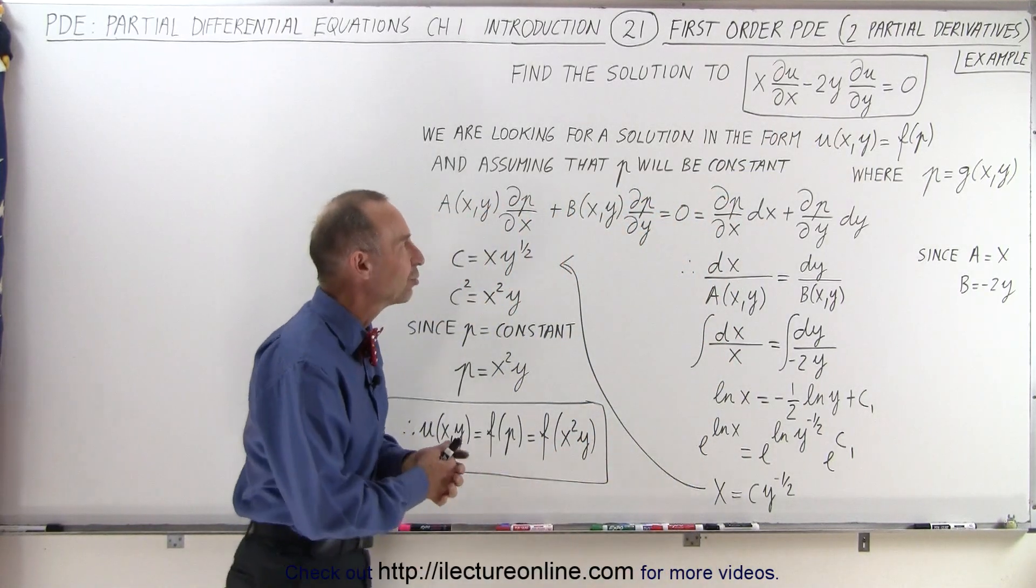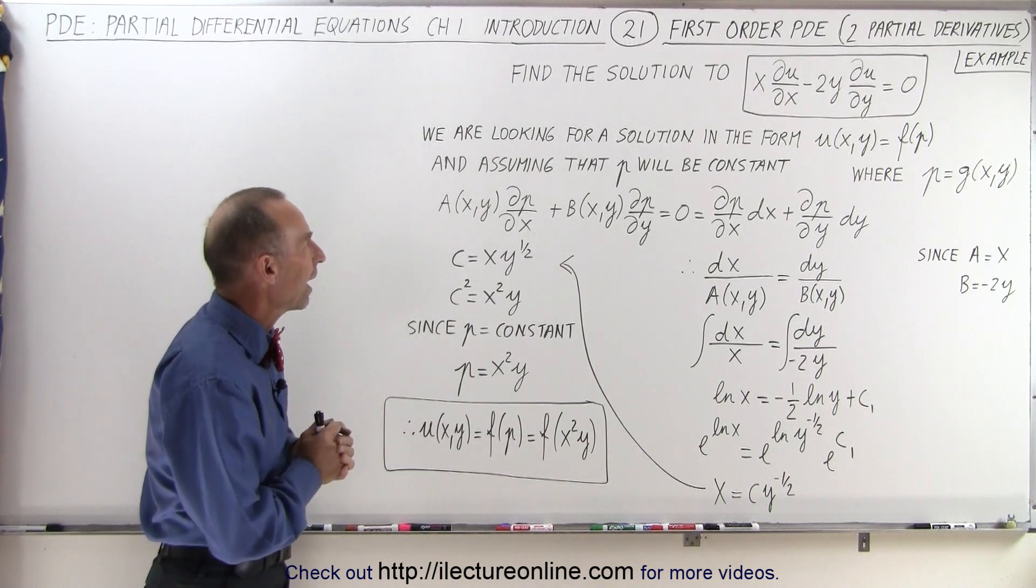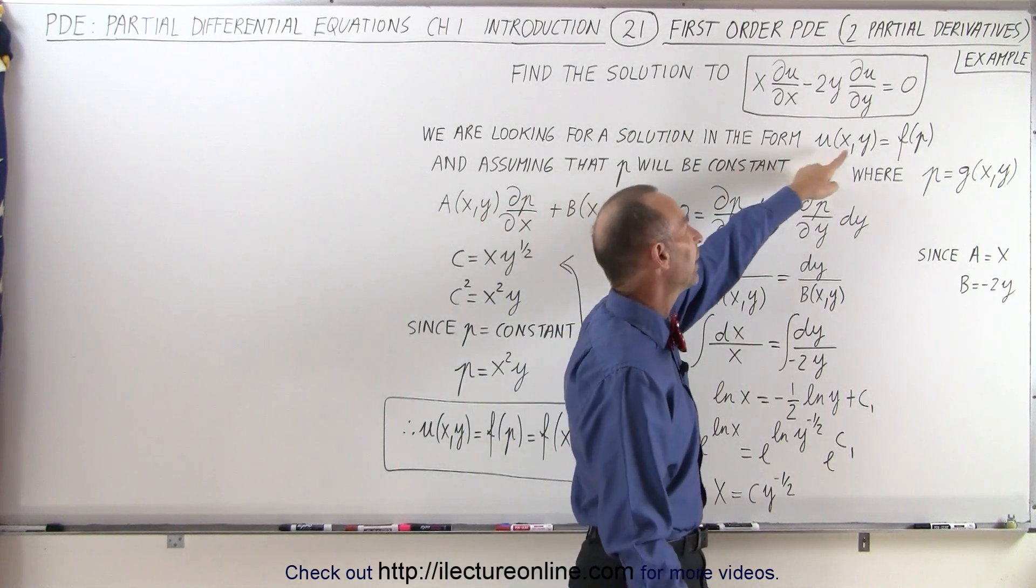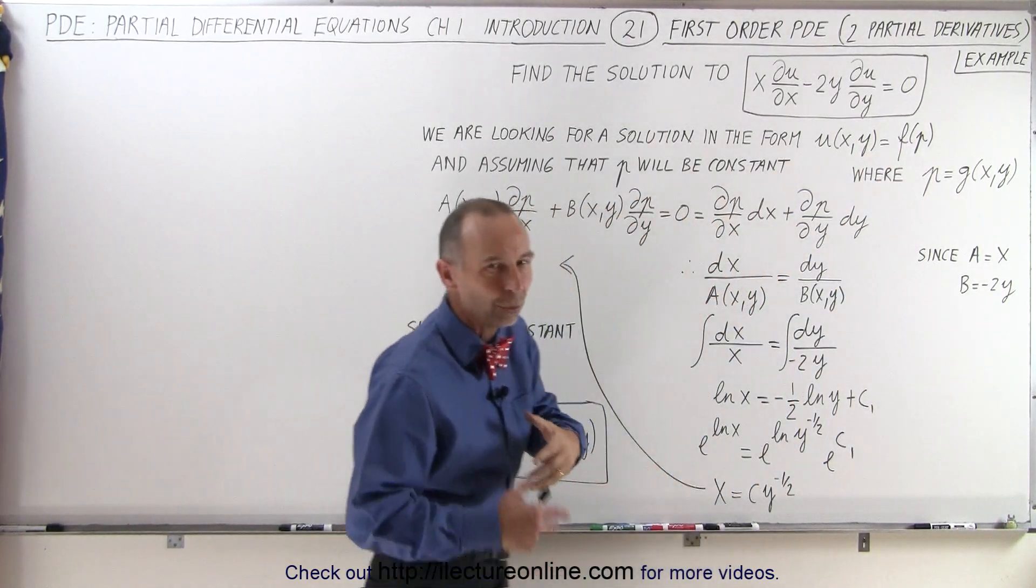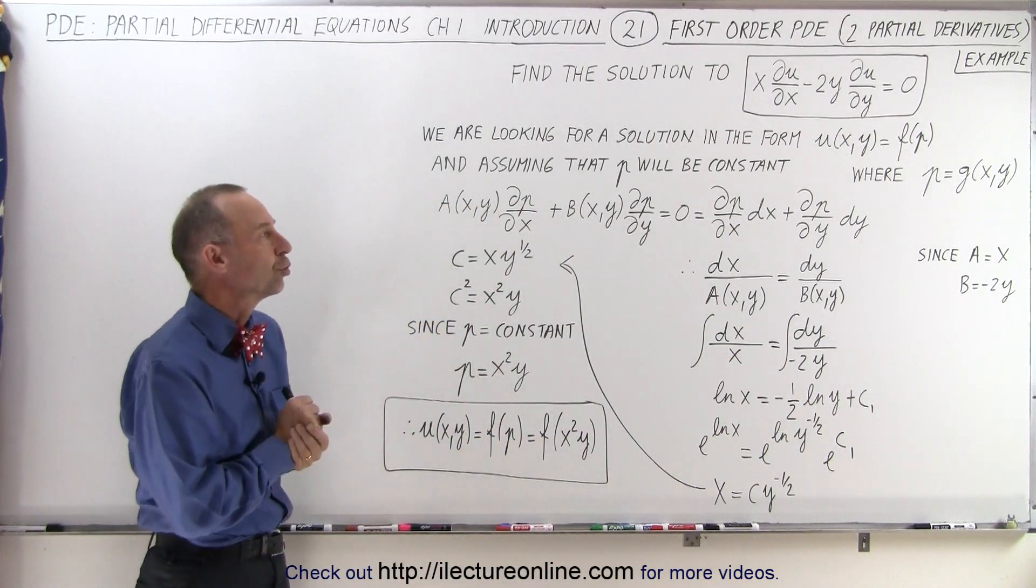So using that as a general form of the equation, how do we find the solution to that? We're going to look for a solution in the form where u is going to be a function of p, and p is a function of x and y. So we're going to use the general form of p to serve as a solution to u.